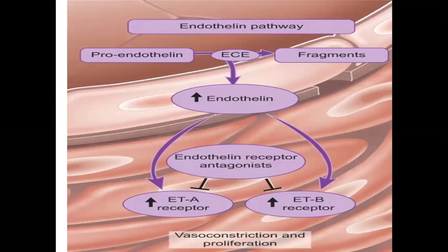Looking at the endothelin pathway, ECE is produced and leads to increased endothelin production. Endothelin receptor antagonists act at the ETA and ETB receptor areas to control blood pressure, especially in the lungs. Endothelin antagonists are specifically used for pulmonary artery hypertension.